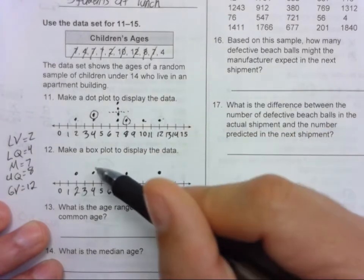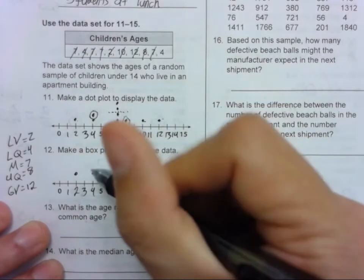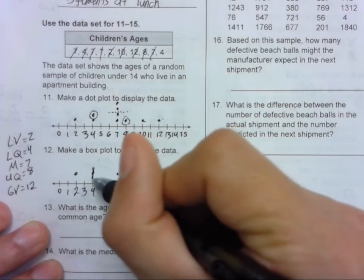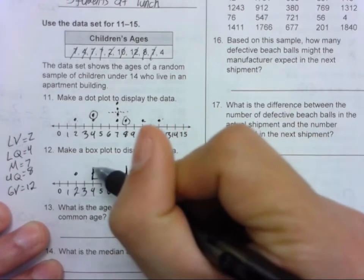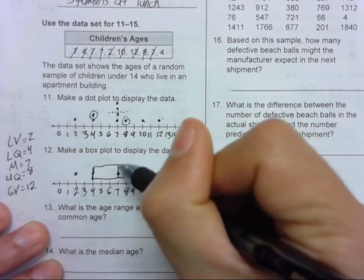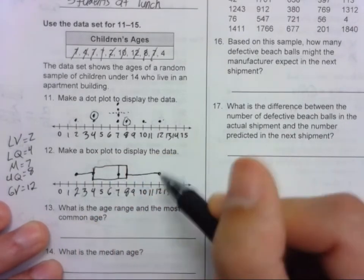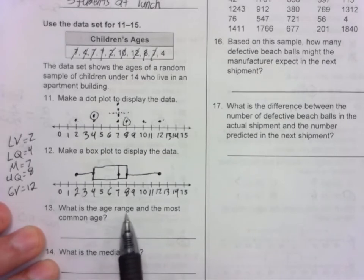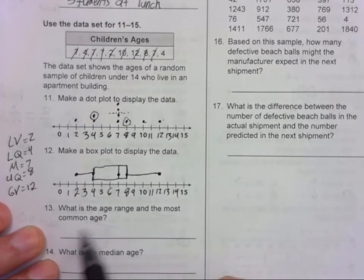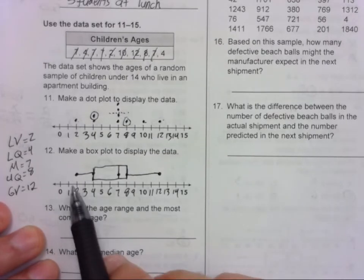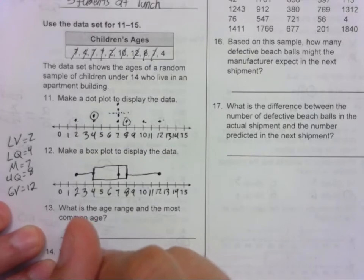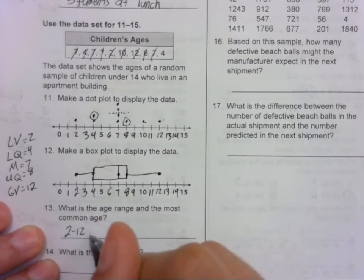So for a box plot, the box needs to go between the lower quartile and the upper quartile. Then we connect the median with a line. And then we extend the whiskers. So number 12. What is the age range and the most common age? So the range goes from 2 to 12. So the range is 10.